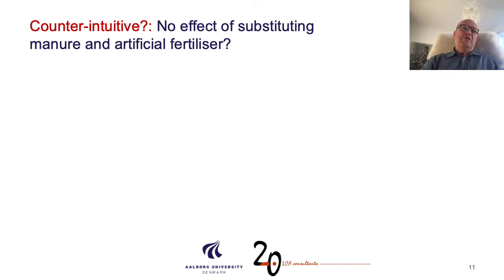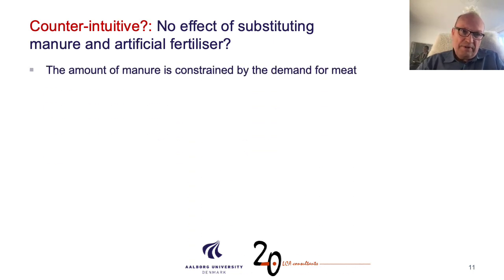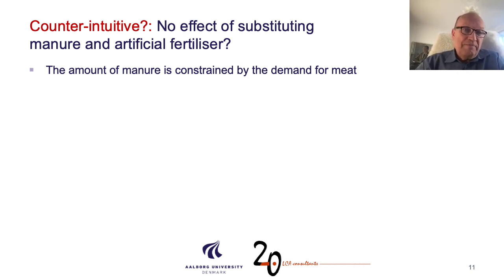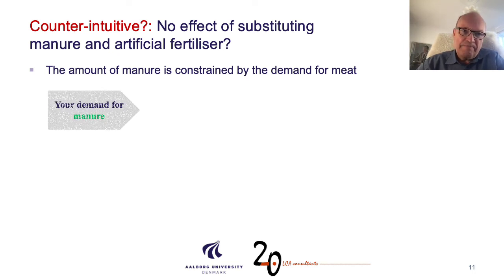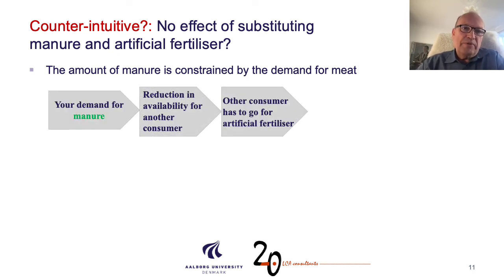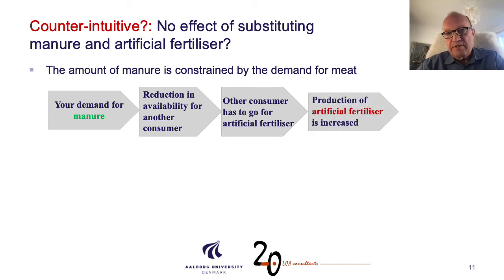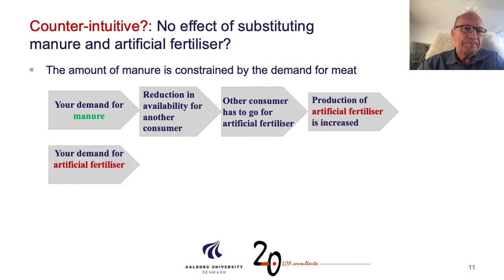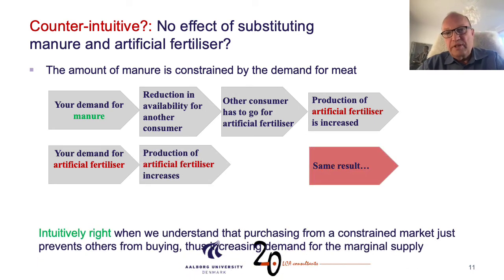What about manure and artificial fertilizer — isn't it a good idea to put manure on your soil rather than artificial fertilizer? The amount of manure is constrained by the demand for meat, just like the hides. There is no more manure being produced just because you ask for it. Your demand for manure will reduce the availability for another consumer. The other consumer has to go for artificial fertilizer, and artificial fertilizer is increased. If you demand artificial fertilizer, obviously more of that will be produced with the same result.